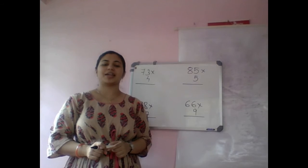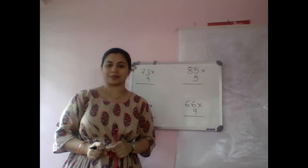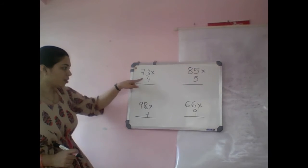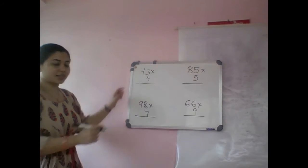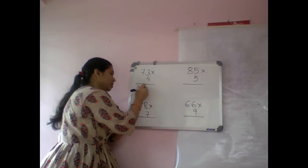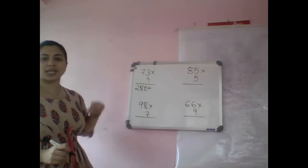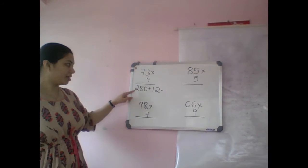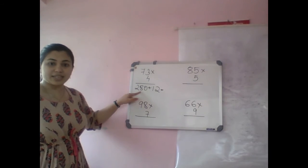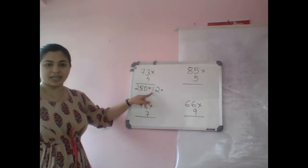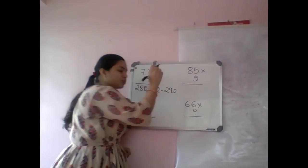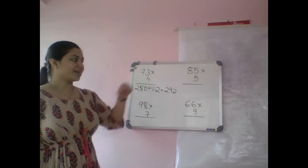This time the value gets bigger. Let's check. 73 into 4. 4 times 70, that is 280, plus 4 times 3, 12. How to add? 200, 280, 290, 292.